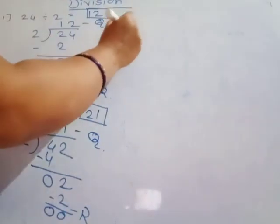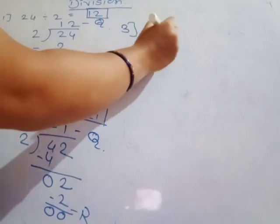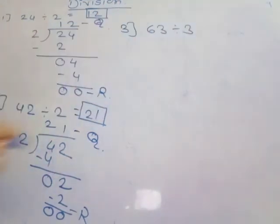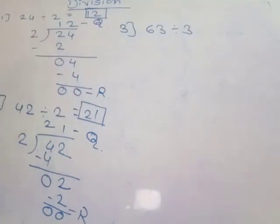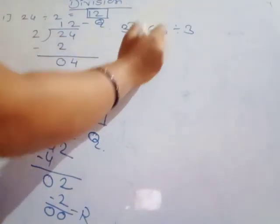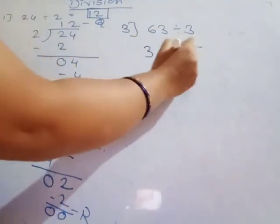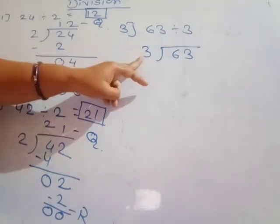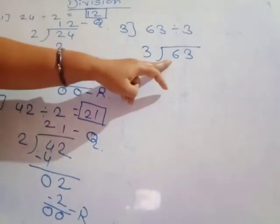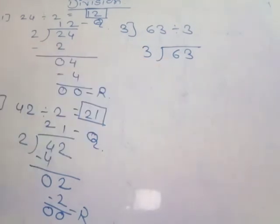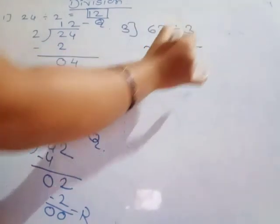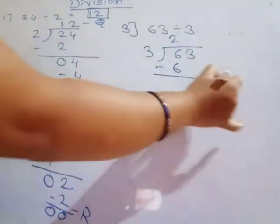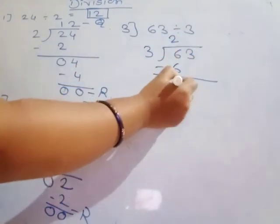Again one example: 63 divided by 3. Sixty-three is the two-digit dividend, divided by 3. See here — in the three times table, 6 is there. Three ones are three, three twos are six. Then 6 minus 6 equals zero.